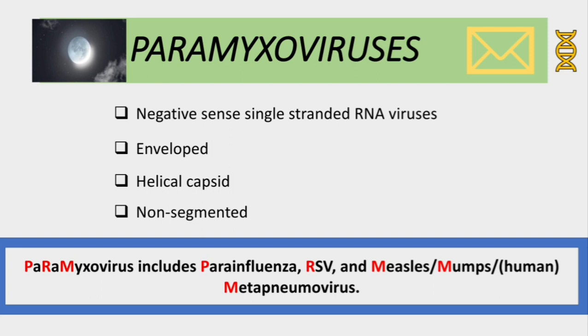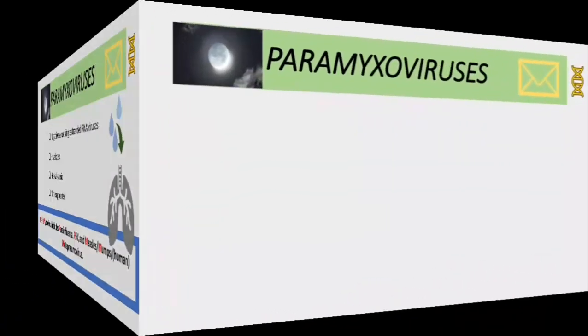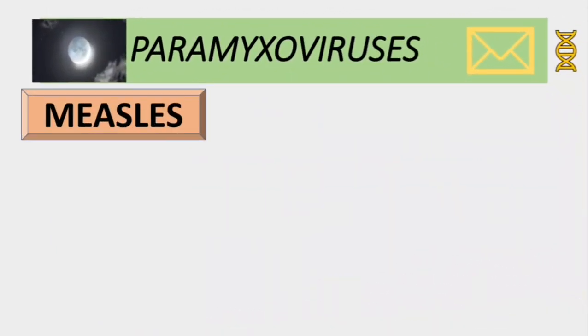The main way of transmission of these viruses is through respiratory droplets. Let's look at these viruses one by one, starting with measles.